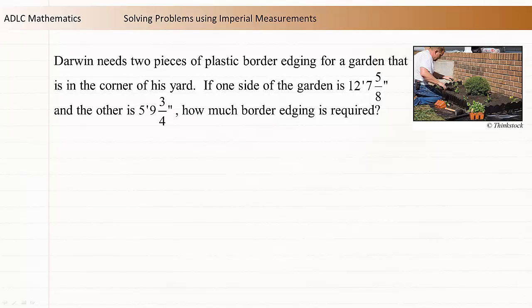The first method involves adding the feet separately from the inches. When adding different units separately, start with the smallest unit, inches in this case. The first measurement includes 7 and 5 eighths inches. The second measurement includes 9 and 3 quarters inches. There are different strategies for adding mixed numbers. One method is to convert all the numbers to improper fractions. This is the strategy we use here.